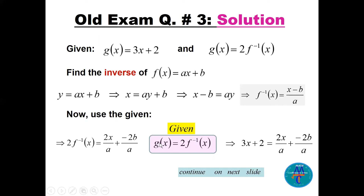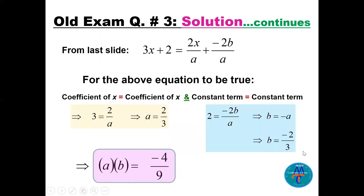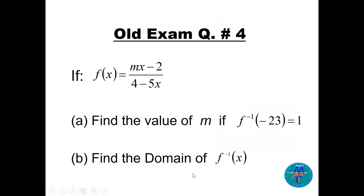Now we equate coefficients. The coefficient of x: 3 = 2/a, so a = 2/3. The constant: 2 = −2b/a, which gives b = −a = −2/3. Therefore a × b = (2/3)(−2/3) = −4/9.